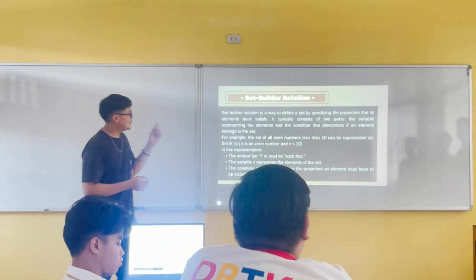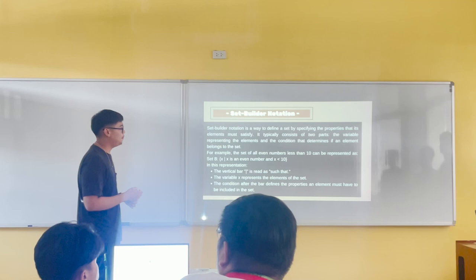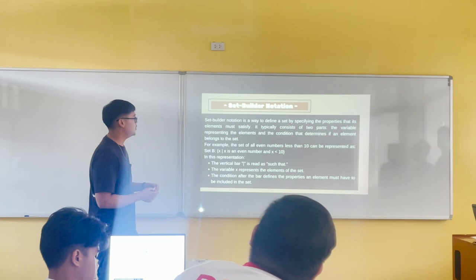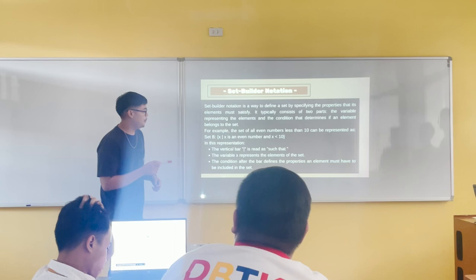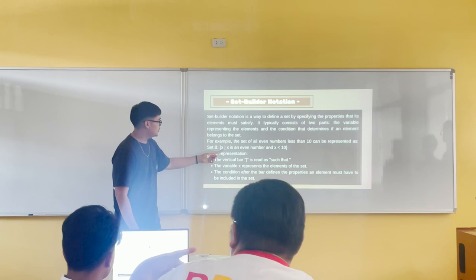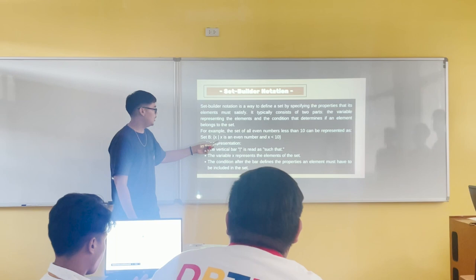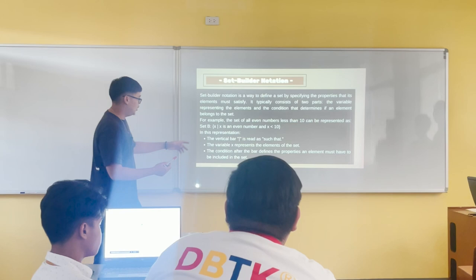The next topic is set builder notation. It is a way to define a set by specifying the properties that its elements must satisfy. It typically consists of two parts: the variable representing the element, and the condition that determines if an element belongs to the set. For example, the set of all even numbers less than 10 can be represented as set B = {x | x is an even number and x is less than 10}.